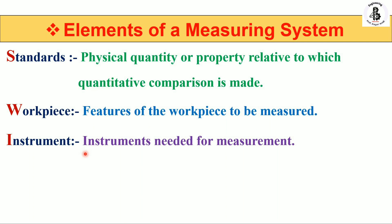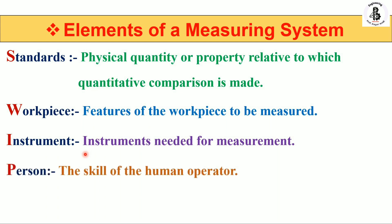An instrument is required for measurements. Then P stands for Persons — the observer or operator. The skill of the human operator is also part of the measurement. If you are familiar with that particular instrument and the conditions of that particular measurement, then you will be able to measure accurate and precise readings. So the person is an essential part of the measuring system.